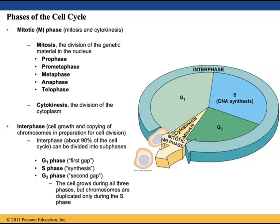G1 phase means first gap. During this phase, many proteins and nutrients are made in preparation for DNA replication. The next phase is the S phase — S means synthesis — and this is when the DNA is actually replicated or synthesized. The third phase is G2, which means second gap. In this phase, the cell continues to grow and make more proteins to prepare for cell division. By the end of interphase, the cell has grown, replicated its DNA, and is prepared to divide.